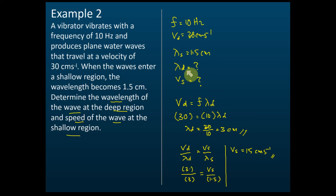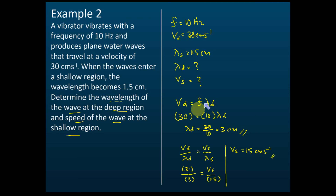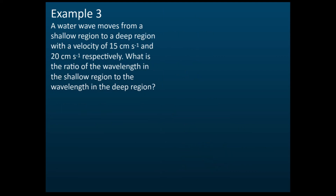The wavelength at the deeper region is 3 cm, and the speed at the shallower region is 15 cm/s. We use v equals f times lambda to find the wavelength, and then we use the wave refraction formula to find the speed at the shallower region.